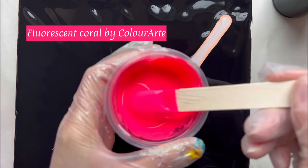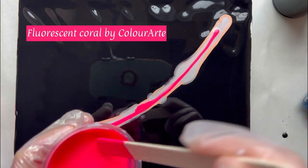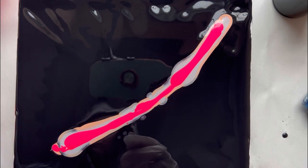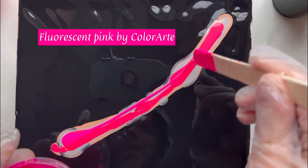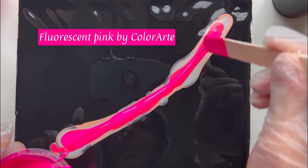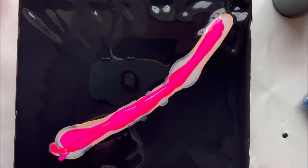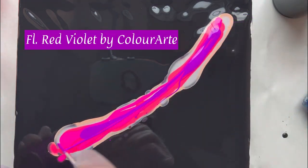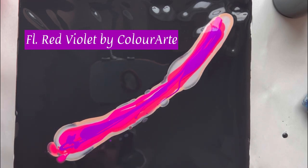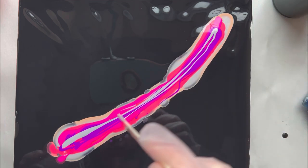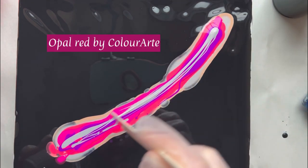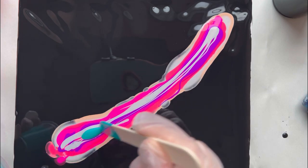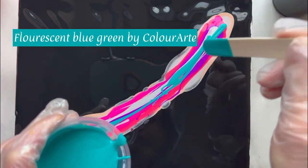Then I'm going with fluorescent coral by Color Art, a very pretty shade. Then goes fluorescent pink, then fluorescent red violet, another layer of opal red, and last but not least fluorescent blue green, probably my favorite shade of the whole fluorescent line.